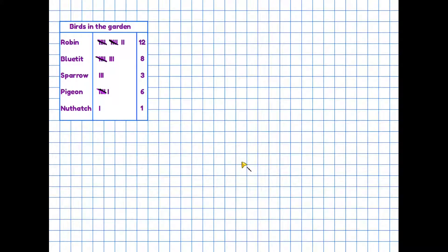We use a bar chart when we want to display a set of information or data in a clear and simple way. For instance, we have some information here on the screen that tells us about the number of birds that have been seen in a garden. So we have the information about the number of robins, blue tits, pigeons, and nuthatches. It's been done as a tally and then added up. So what we need to do with this information is display it in a bar chart.